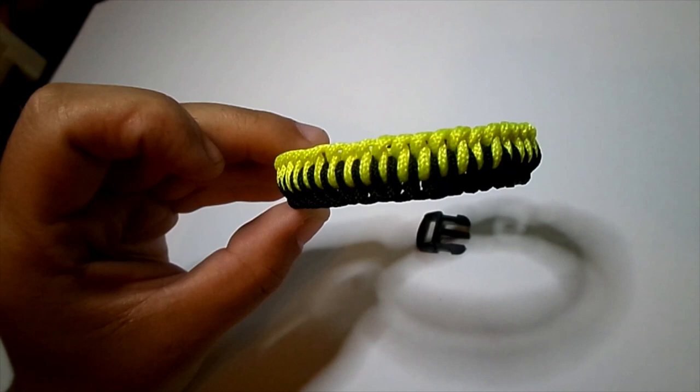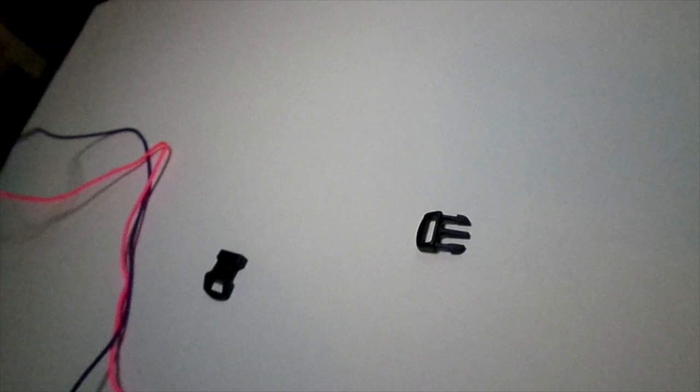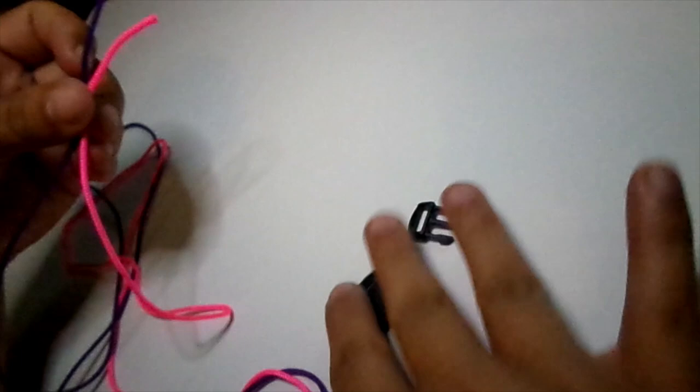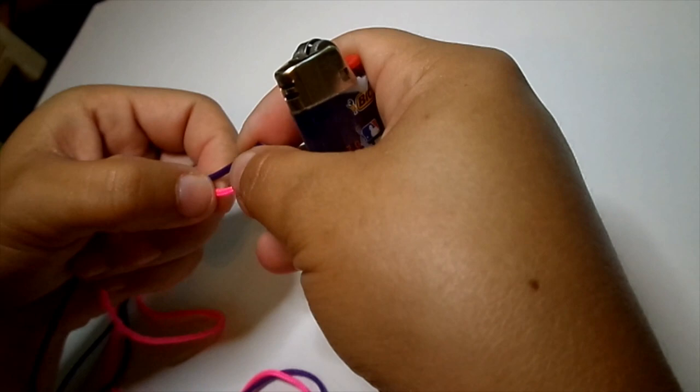Hi guys, today I'm going to show you how to make a single Genoese paracord bracelet. I'm going to use pink and purple today. I have about six feet of each color and I am going to make about a six inch long bracelet with a buckle.